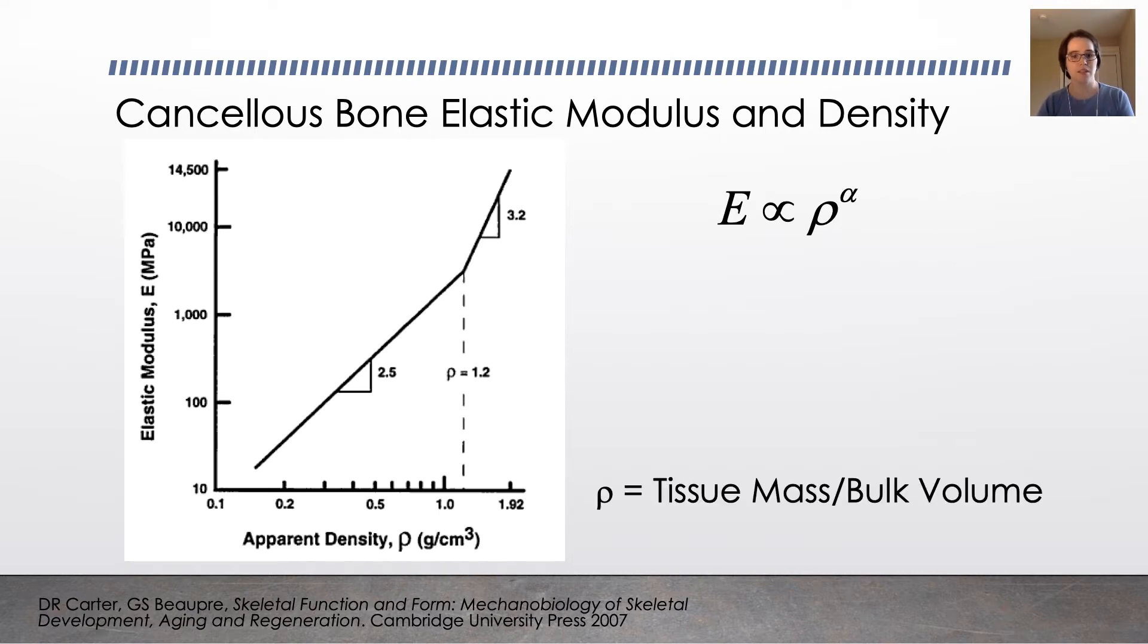The apparent density is the tissue mass divided by the bulk volume. When we say bulk volume here, it includes both the solid and the void components. So those empty spaces as well as the solid components. You can see that there's a power law between these. It's a power law because this is a log-log plot, and you've got a straight line on the log-log plot. So the elastic modulus E is directly proportional to the apparent density of the bone, though there is that knee at about 1.2 grams per cubic centimeter for the apparent density.